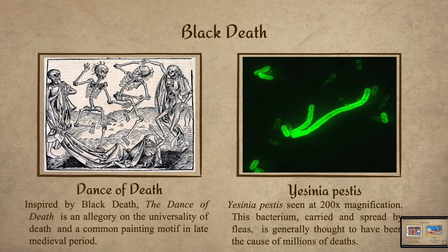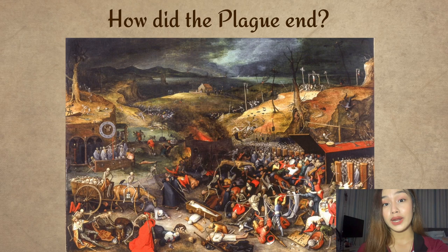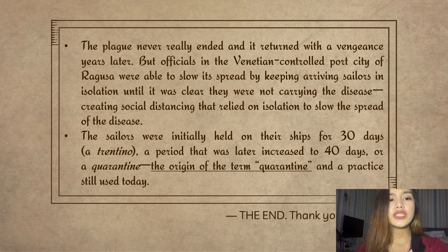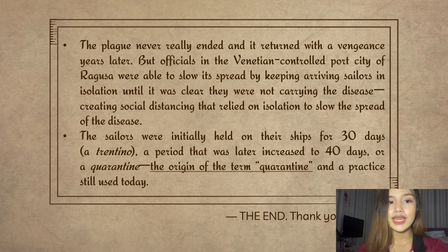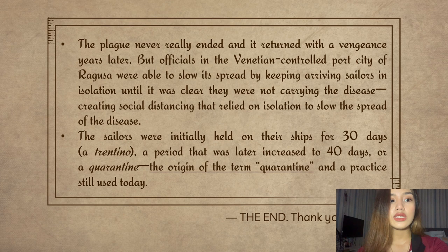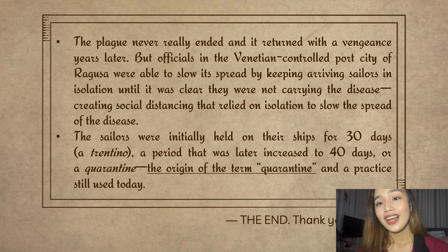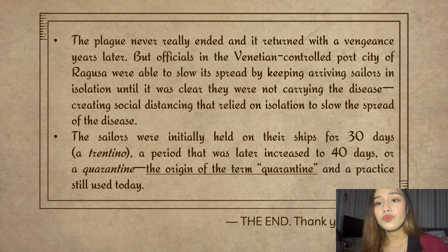The plague never really ended and it returned with vengeance years later. But officials in the Venetian-controlled port city of Ragusa were able to slow its spread by keeping arriving sailors in isolation until it was clear they were not carrying the disease — creating a form of social distancing that relied on isolation to slow the spread. This sounds familiar: isolation and social distancing are practices we also use today during the global pandemic — the same methods were used during the Black Death.